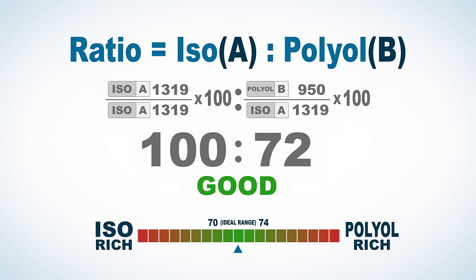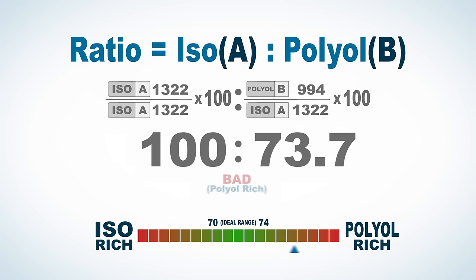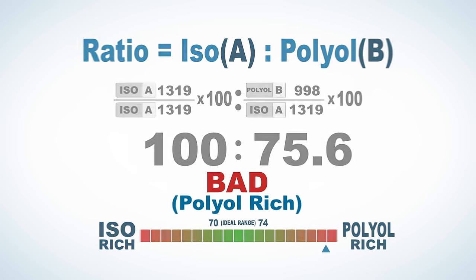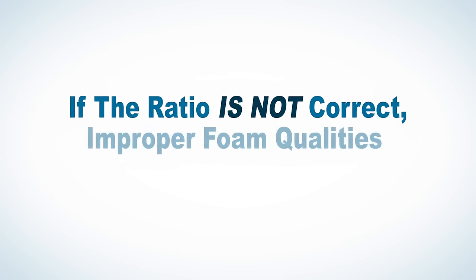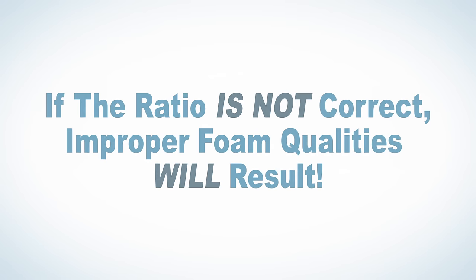This is ideal for a PU system with a polyol target ratio range of 70 to 74. If the ratio dropped below 70, the end foam would be ISO rich. If the ratio rose to over 74, the foam would be polyol rich. If the ratio is not correct, improper foam qualities will result.